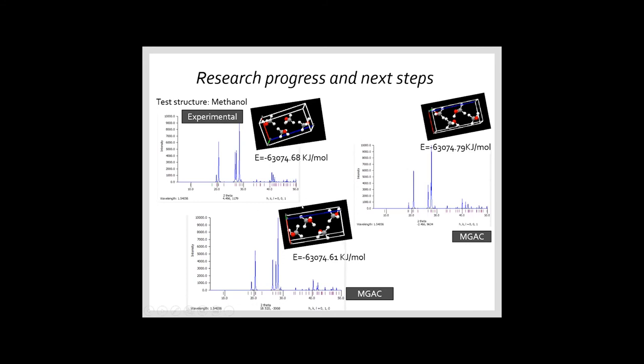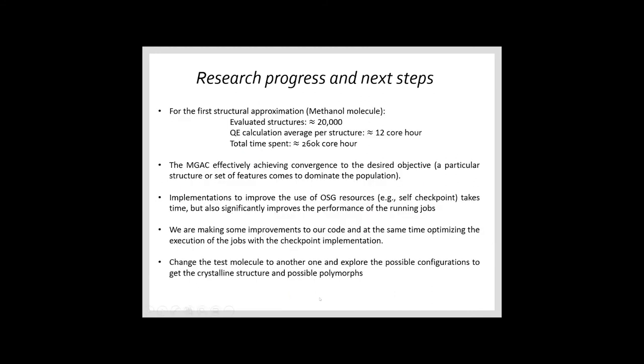We got this from a recent run. We evaluated around 2000 structures with a QE calculation average per structure of 12 hours. We know now that the MGAC is doing what we want it to do for the molecules we want to obtain. And the implementation to improve the use of the OSG, for example the self-checkpoints, takes time but also improves the performance of the running jobs. We are making some improvements to our code and at the same time optimizing the execution of the job with the checkpoint implementation.